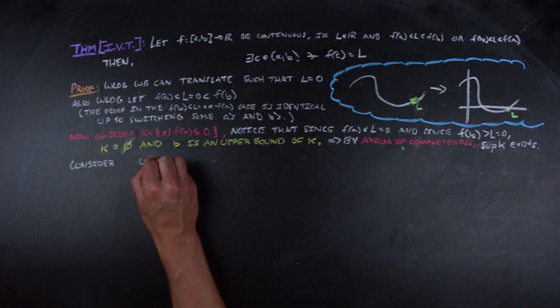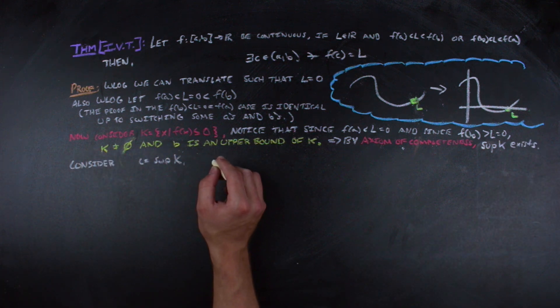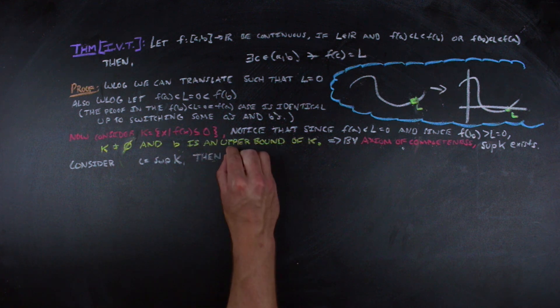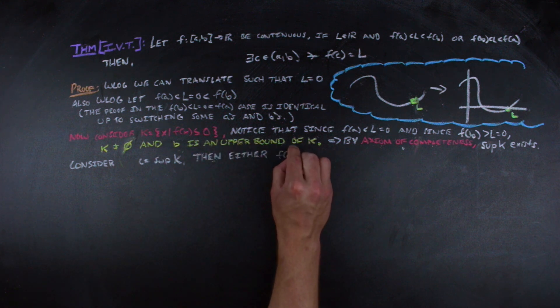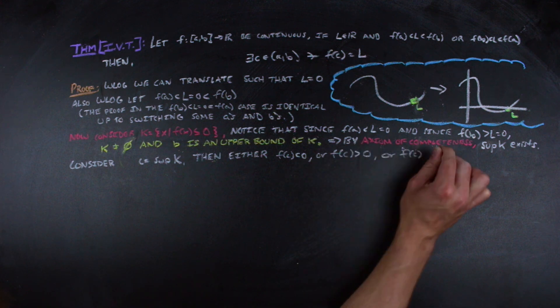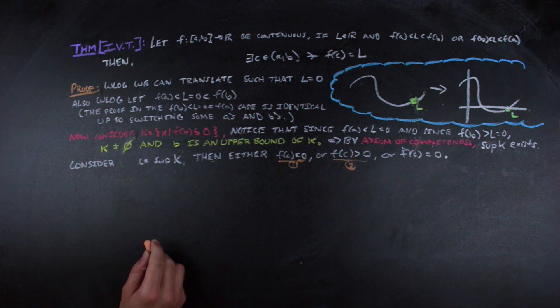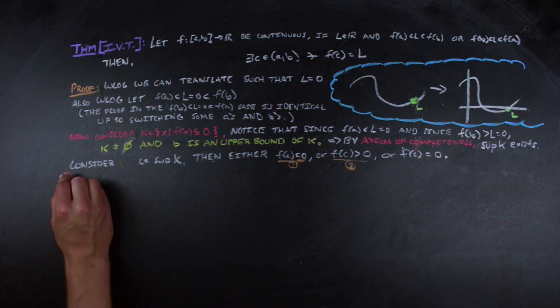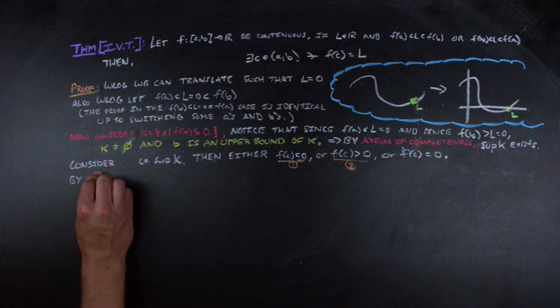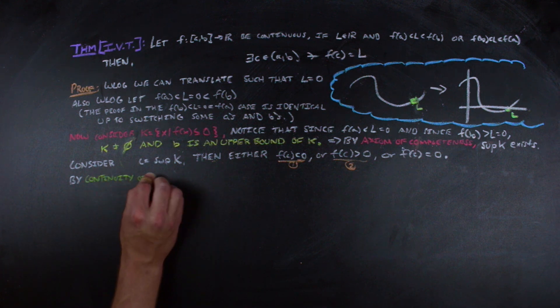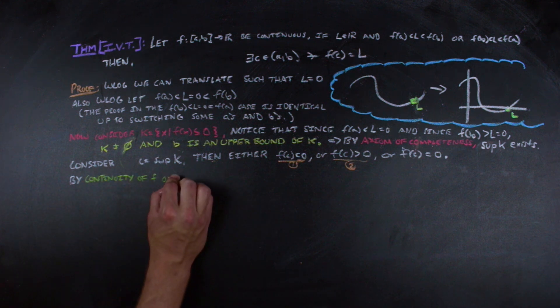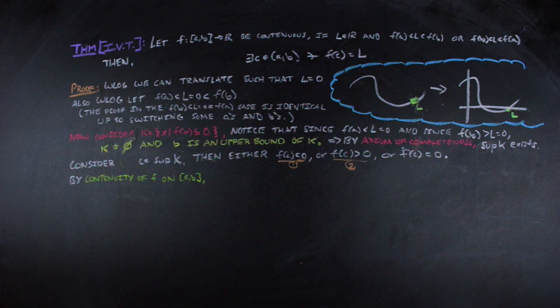Consider c equal to the supremum of K. Now we have three cases. The image of c can be less than, greater than, or equal to 0, and one of these must be true. So if we can rule out two of the cases, we know that the third is the reality. Before we go ahead and start ruling out certain ones of those cases, we're going to go ahead and focus on what the function being continuous grants us.